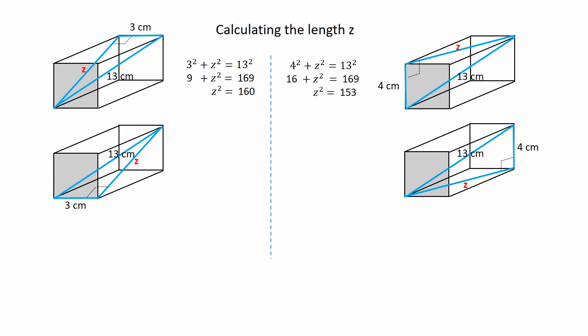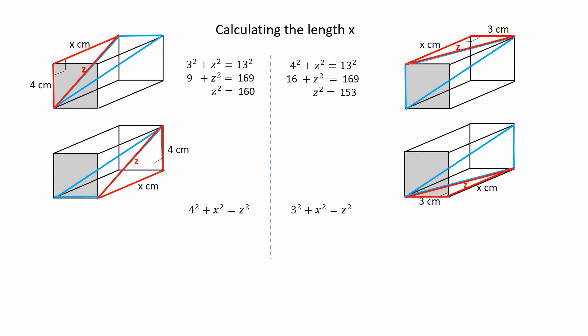It is not necessary to find the value of z as only z squared is needed. Applying Pythagoras to the red triangle on the left gives 4 squared plus x squared equals z squared, and on the right gives 3 squared plus x squared equals z squared.